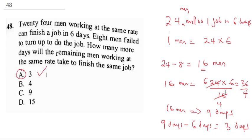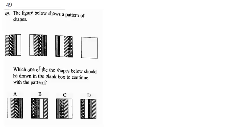Question 49: the figure below shows a pattern of shapes. Which one of the following shapes should be drawn in the next box to continue with the pattern? Let's study the shapes. This appears first here, second here, third here, that means it's going to appear fourth here.